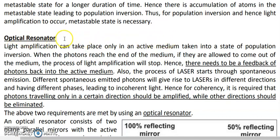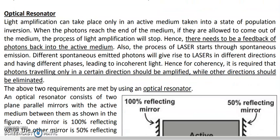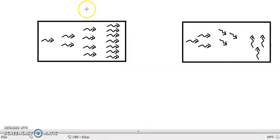One important last component of a laser system is what is called an optical resonator. Every laser system has this component or device called an optical resonator. Before we go into the details about what the optical resonator is, we'll try to understand why we require it — then automatically we will understand what it is.